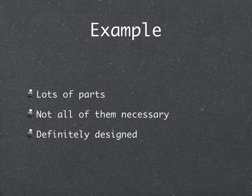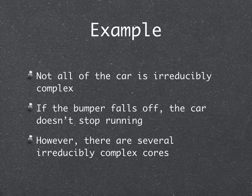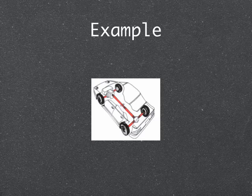Here's an example: a Corvette. It's definitely designed, and there are lots of parts — not all of them are necessary. Although not all of the car is irreducibly complex — for example, if the bumper falls off, the car doesn't stop running — there are several irreducibly complex cores. One of them is the drive shaft. Many of the parts on the drive shaft are useful in other areas; for example, the wheels can be used individually for a variety of things. But the drive shaft itself, with the basic function of moving the car along, if any of its major parts are removed, the whole thing ceases to function. Most drive shafts have extra parts which can be removed that improve the function of the basic system, but there is a basic core where the removal of any part will remove the functioning of the whole system.